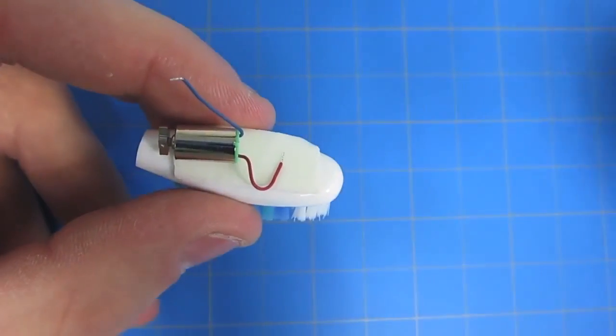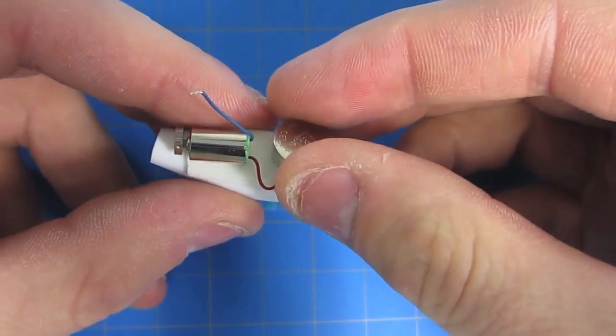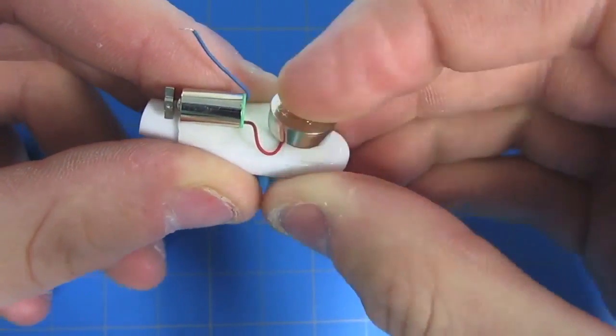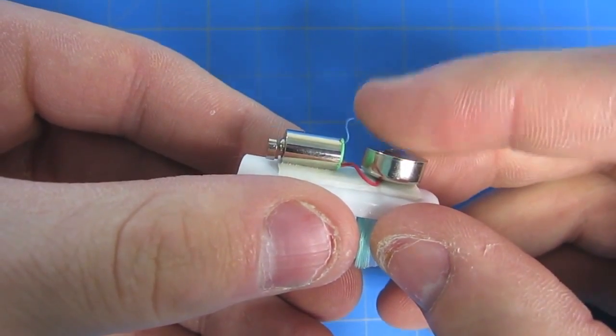Next, take your coin cell battery and put it so that the word side is face up and the bottom side is touching the first wire lead. You can use your finger to make sure that the contact is being made and the circuit is complete.